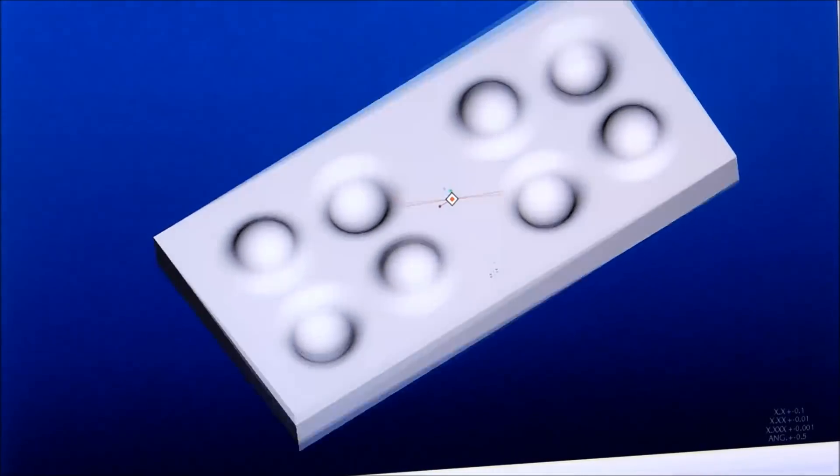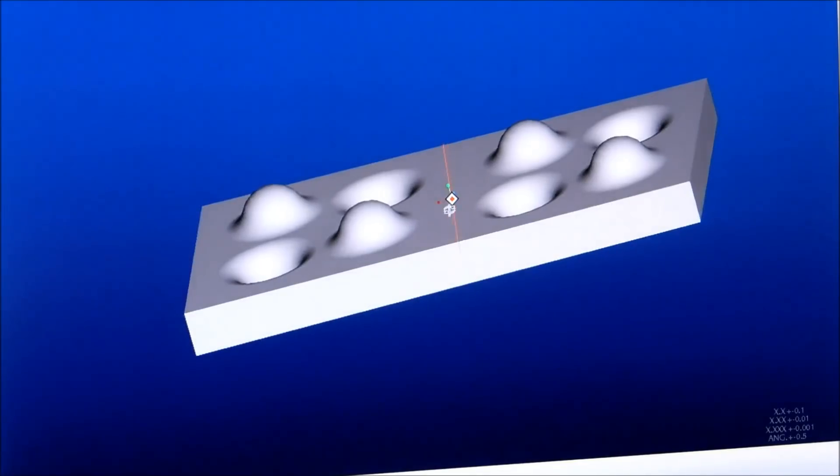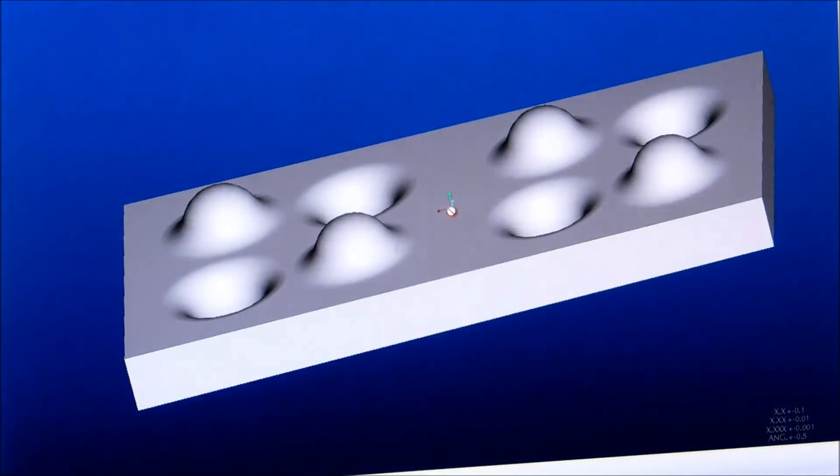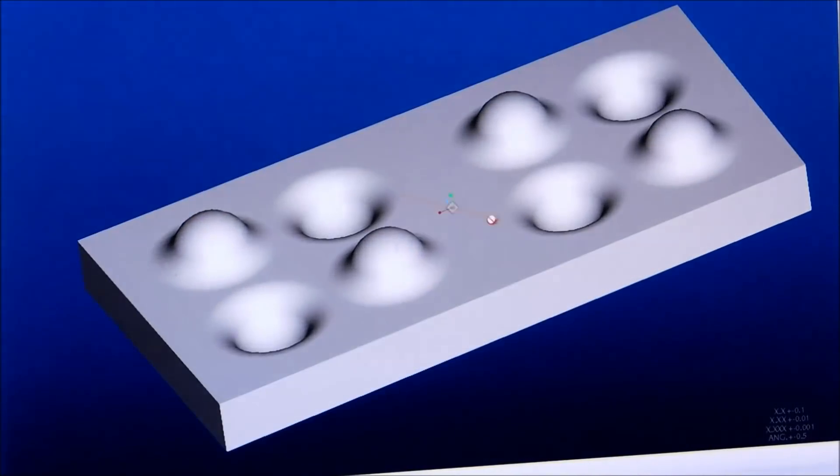This particular part here will be done with a two-flute ball end mill. And ultimately when it's done, I'm going to slice it in half and turn it around, so we're going to have two identical halves with protrusions and dimples.